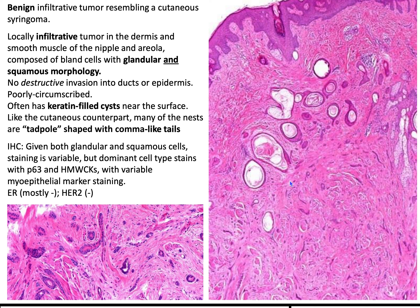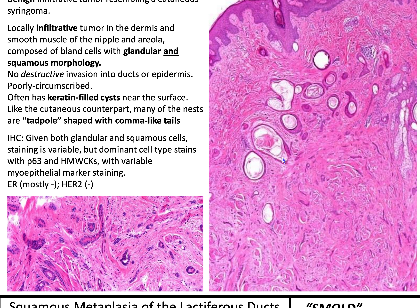Syringomatous tumor is a locally infiltrative tumor in the dermis and smooth muscle of the nipple and areola. The cells can look cytologically glandular and squamous but are bland without any significant atypia. There's no destructive invasion into the ducts or epidermis. It is poorly circumscribed and often has keratin-filled cysts near the surface. For IHC, because there can be both glandular and squamous cells it can be variable, but the dominant cells stain with P63 and high molecular weight cytokeratins, with variable myoepithelial marker staining and mostly ER and HER2 negative.